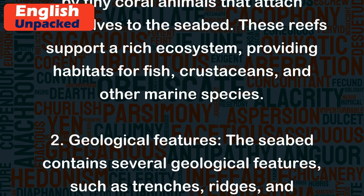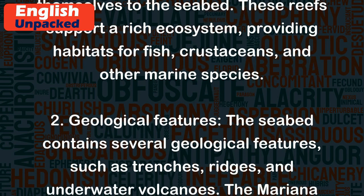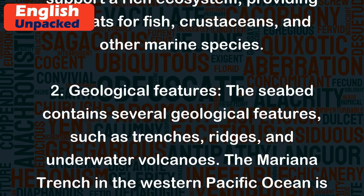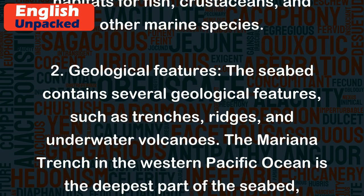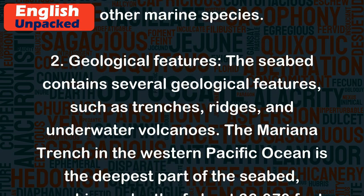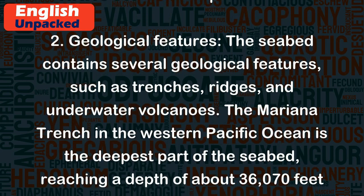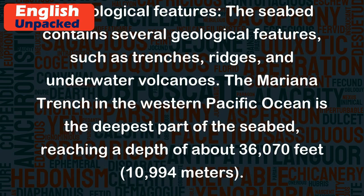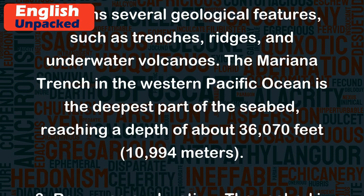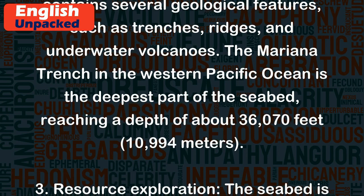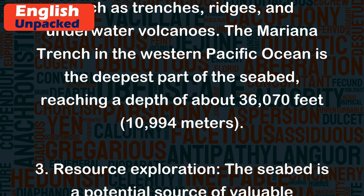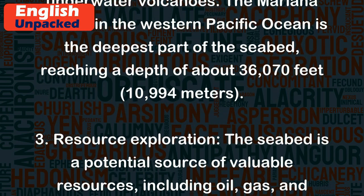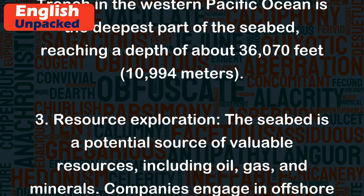2. Geological Features. The seabed contains several geological features, such as trenches, ridges, and underwater volcanoes. The Mariana Trench in the western Pacific Ocean is the deepest part of the seabed, reaching a depth of about 36,070 feet, or 10,994 meters.